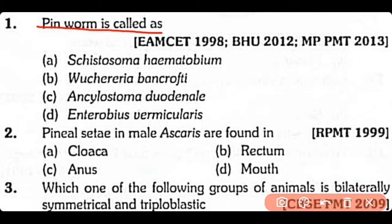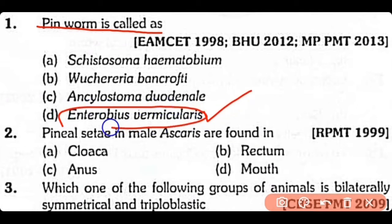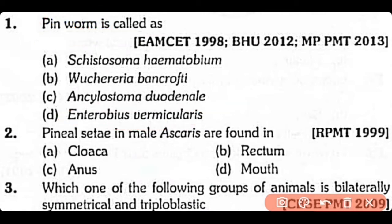Question 1: Pinworm is called as (A) Schistosoma haematobium, (B) Wuchereria bancrofti, (C) Ancylostoma duodenale, (D) Enterobius vermicularis. The correct answer is Option D. Enterobius vermicularis is the scientific name for pinworm and it is mostly present in the large intestine.